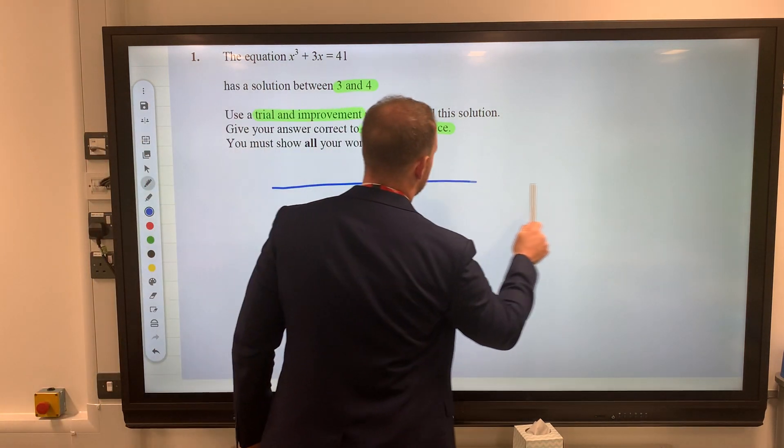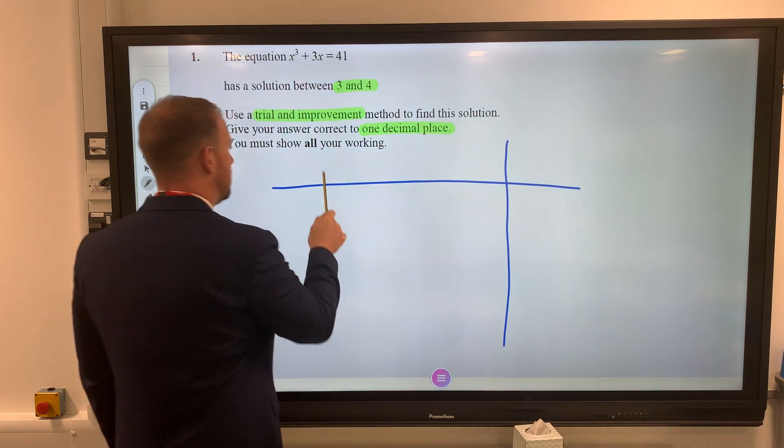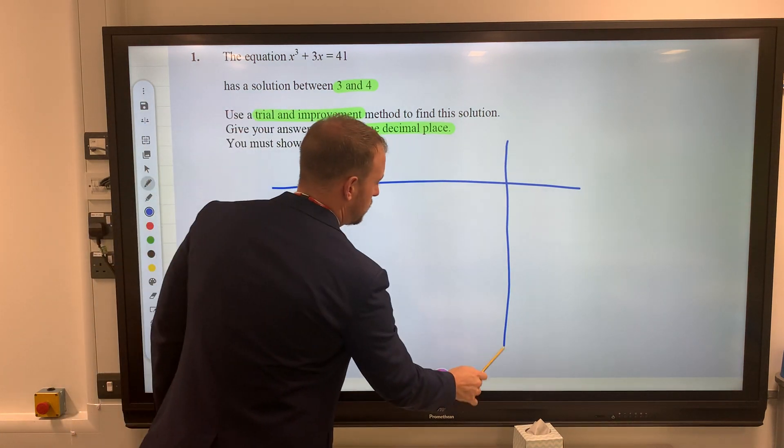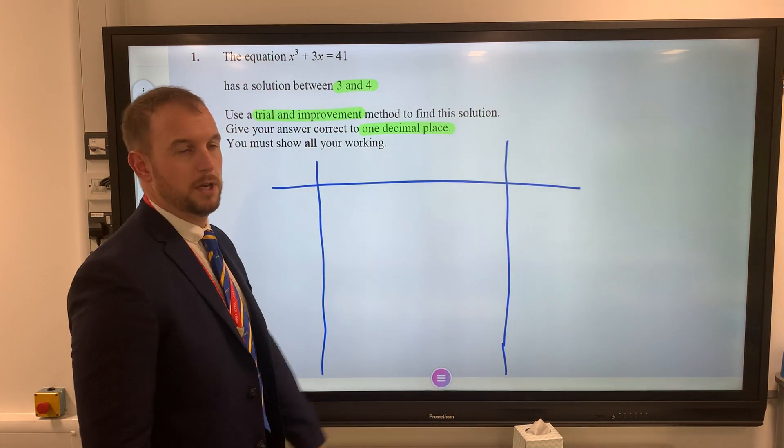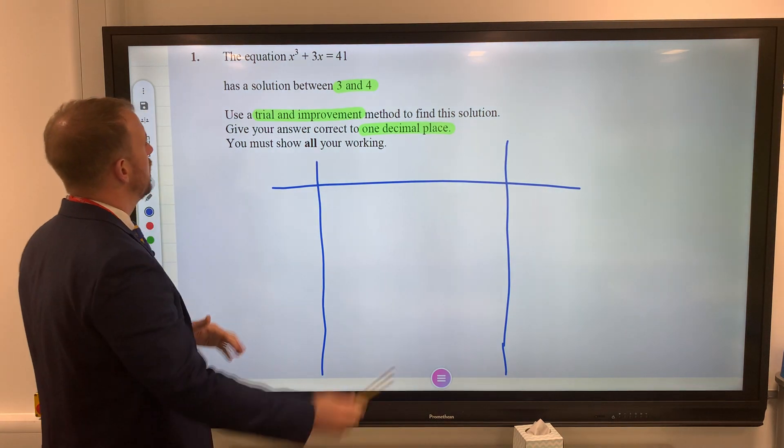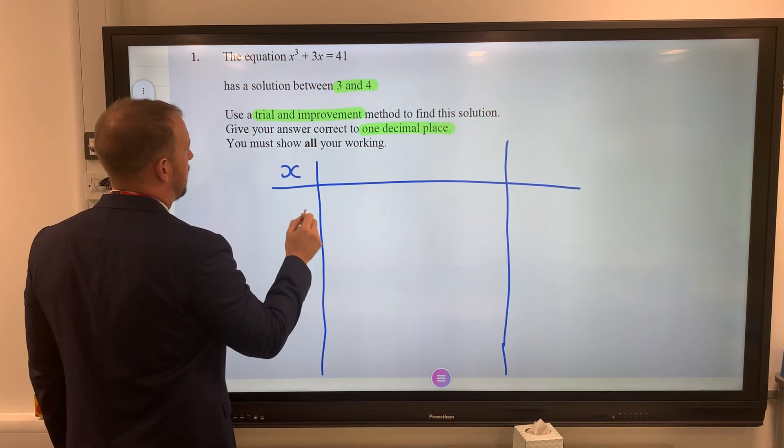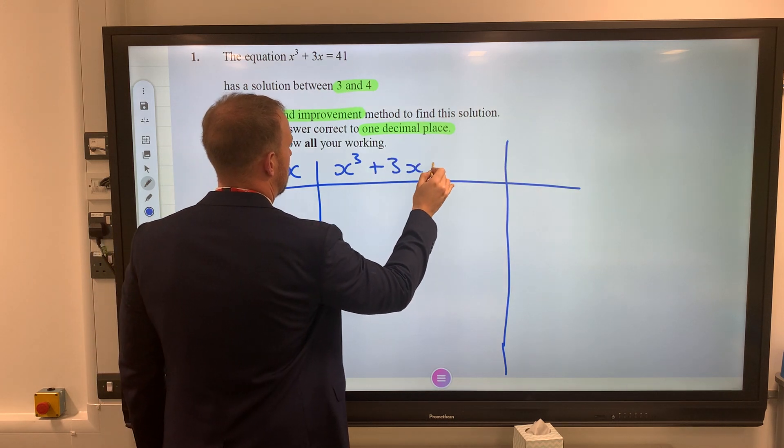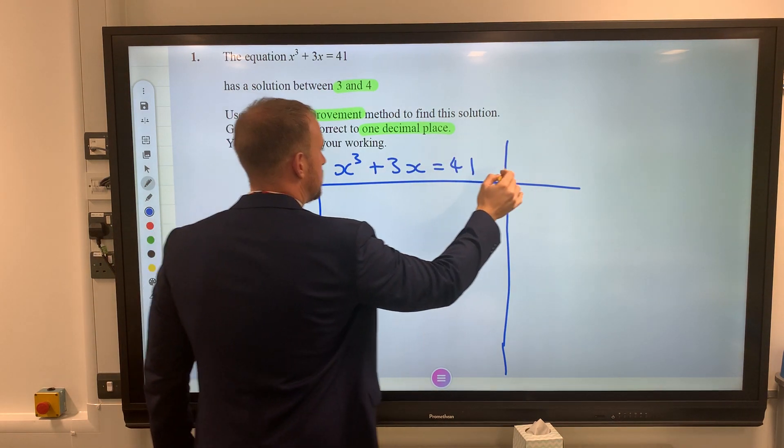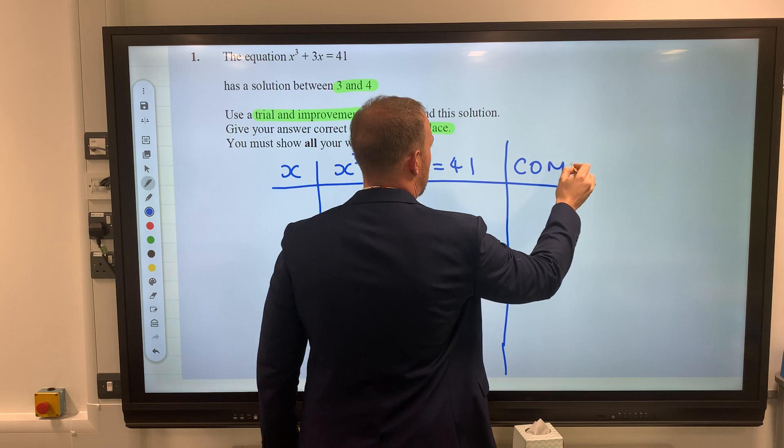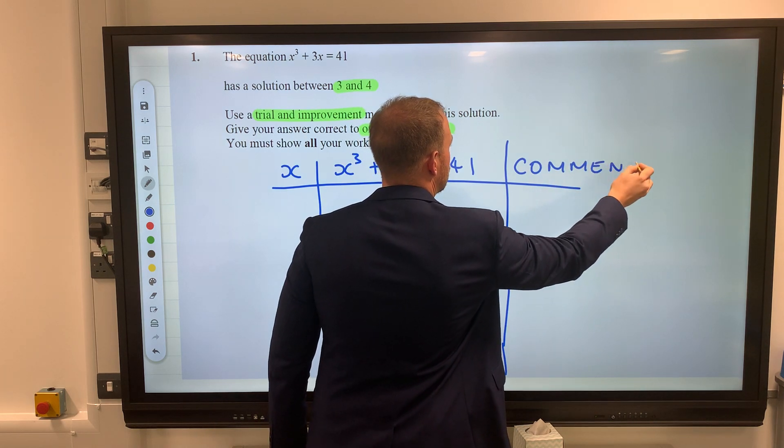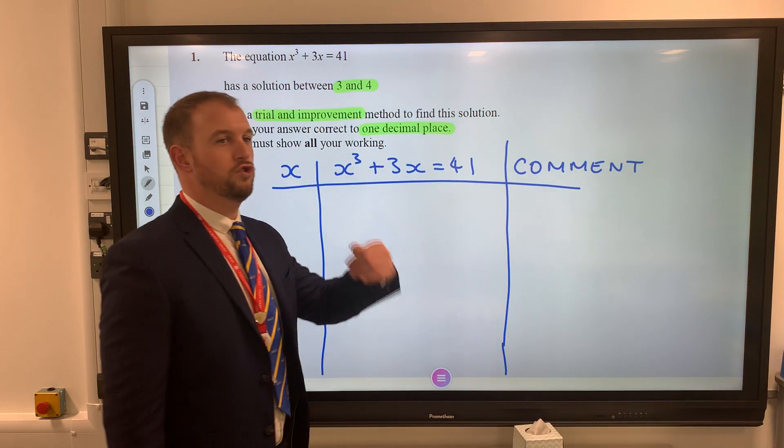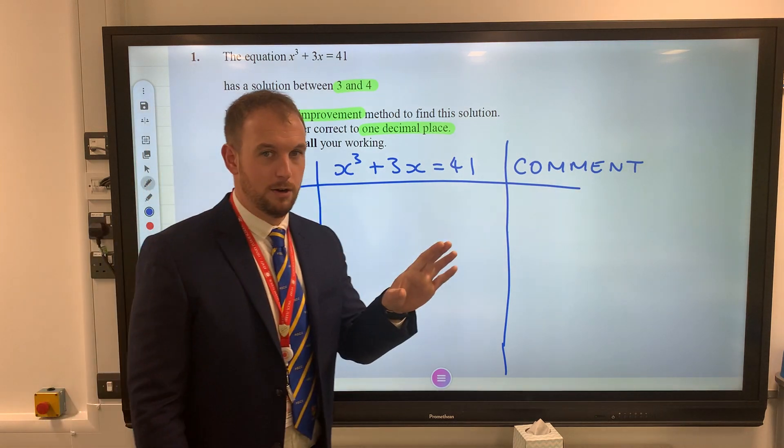We need to first draw a table. Don't put a bottom on the table because we don't know how far we're going to go. This column is our x values, this one's our equation, and this one's our comment. Trial and improvement - we're going to trial something, see how close it is, and then improve on it.